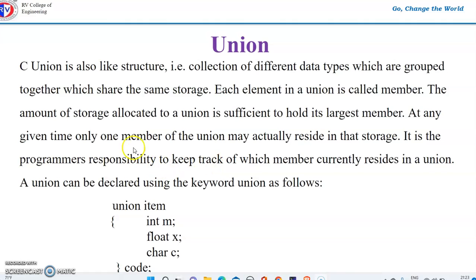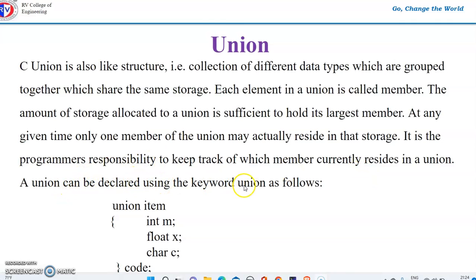At any given time, only one member of the union may actually reside in that storage, and it is the programmer's responsibility to keep track of which member currently resides in the union. The compiler will not be able to specify which member is stored. A union is declared using the keyword union.